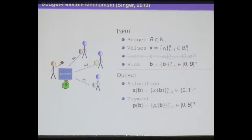If we consider deterministic mechanisms only, each allocation is an n-dimensional vector where each entry is either 0 or 1, meaning whether or not the buyer purchases item i. If we also consider randomized mechanisms, x_i can also be a fractional number between 0 and 1, meaning the purchase probability. The payment is an n-dimensional vector where each entry means the payment to each item.